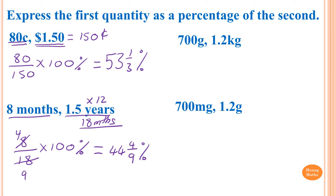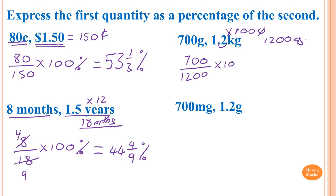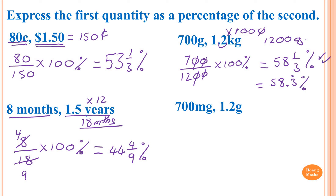700 grams and 1.2 kilograms. One kilogram is 1000 grams, so 1.2 kilograms is 1200 grams. Now just go 700 over 1200 times by 100 percent. The two 100s cancel, leaving 700 divided by 12, which gives 58 and one-third percent. You can also write that as 58.3 recurring percent, but the mixed numeral is better.